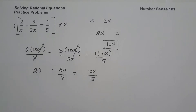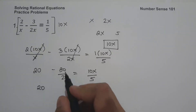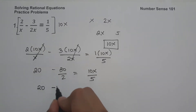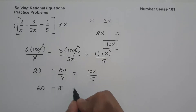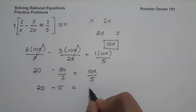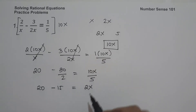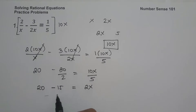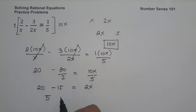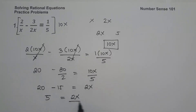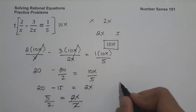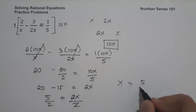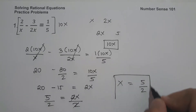So let us simplify. We have 20 minus 15 — since negative 30 divided by 2 is negative 15 — equals 10x divided by 5, that is 2x. So 20 minus 15 is 5, equals 2x. Dividing both sides by 2, the value of x is 5 over 2, and this will be our answer.